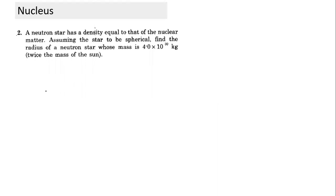A neutron star is an interesting application. If a star collapses and the orbital electrons collapse too, it becomes composed only of nuclear material. The density of a neutron star equals the density of a nucleus, which we calculated as approximately 10¹⁷ kg/m³. This question explores the significance of nuclear density.